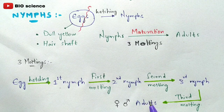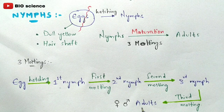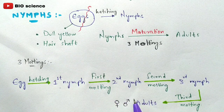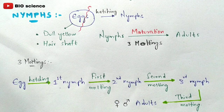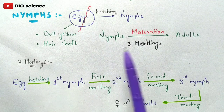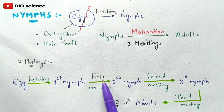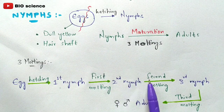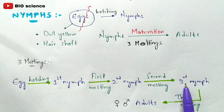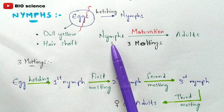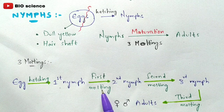The adults include both male and female individuals. Totally three molting stages are done for the nymph to completely develop into an adult — either male or female. The nymph develops into adult through these three molting stages.